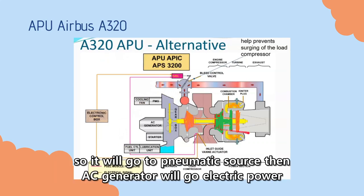For the next, it will go to the pneumatic source. And for the AC generator, it will go to the electric power.